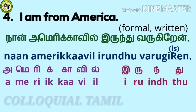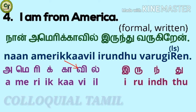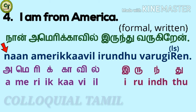You learned 'nán' and 'verri gireen' in previous videos. For 'amerikavil': 'a' a short vowel, 'may' a short letter, 're' a short letter, 'ik' a consonant, 'ka' a long letter, 'v' a short letter, 'il' a consonant. Together: amerikavil. For 'irindhu': 'e' a short vowel, 'ru' a short letter, 'ind' a consonant, 'to' a short letter. Together: irindhu. Nán amerikavil irindhu verri gireen. It's a bit difficult for beginners.